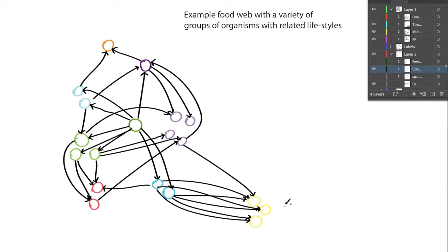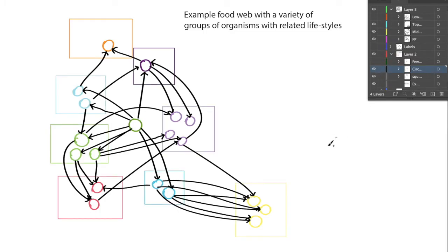There's this group of yellow organisms that eat mostly from one type of organism, but this one can also eat from organisms that play a different niche role. So we can think about these as groups of organisms that have different functions in the ecosystem.